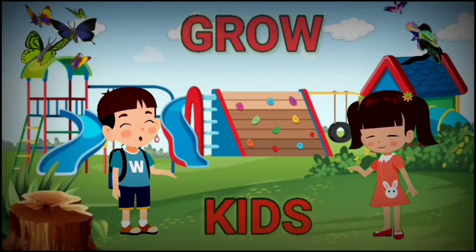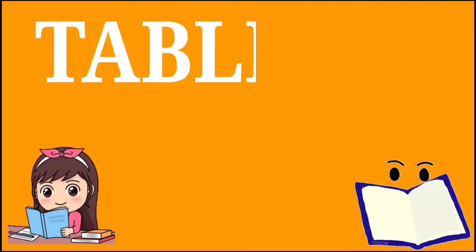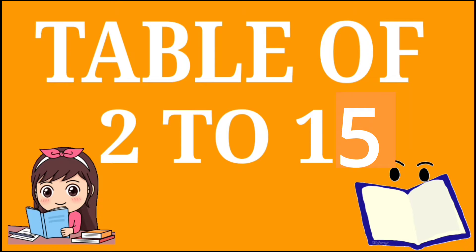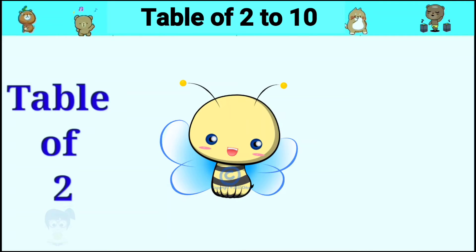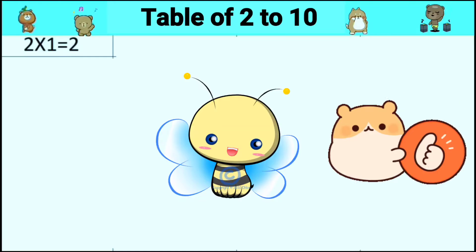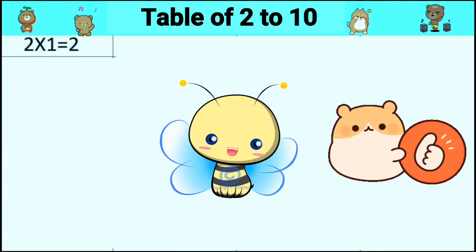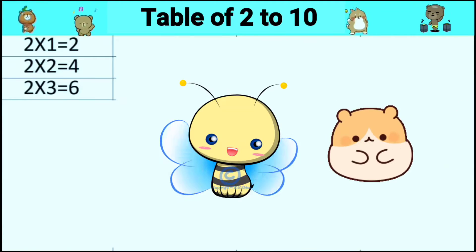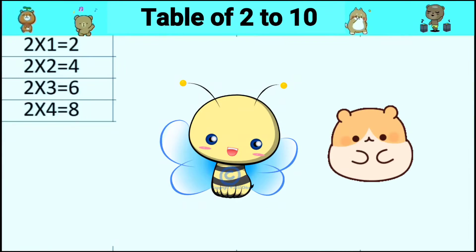Table of 2. 2 ones are 2, 2 twos are 4, 2 threes are 6, 2 fours are 8.